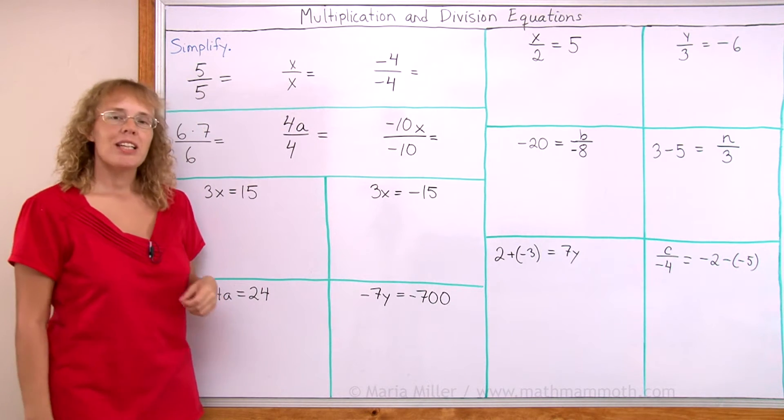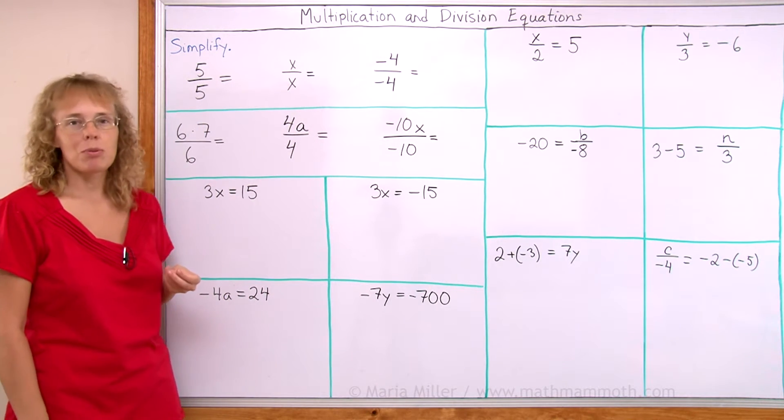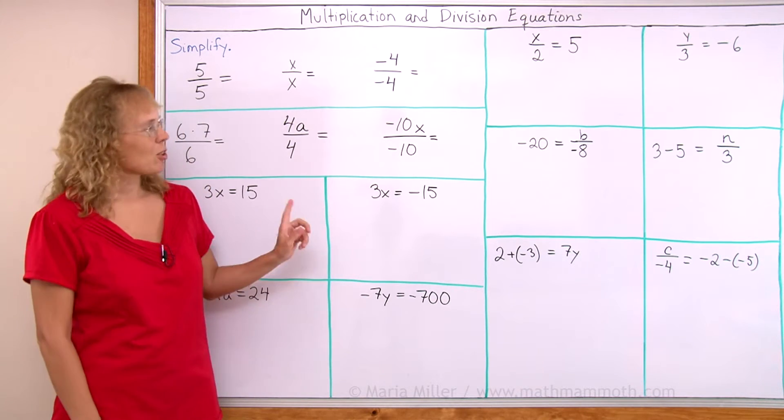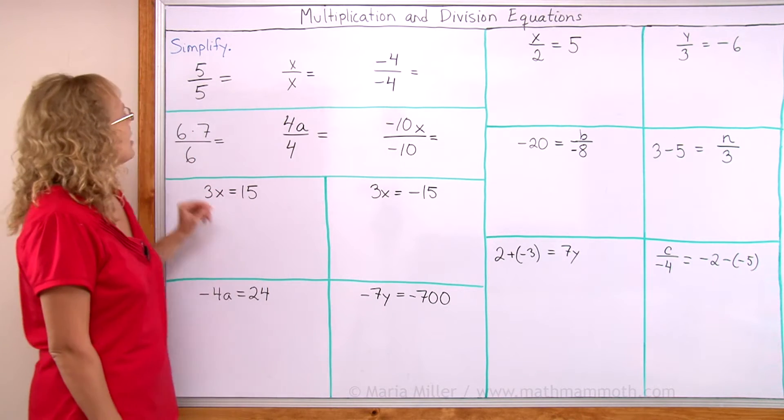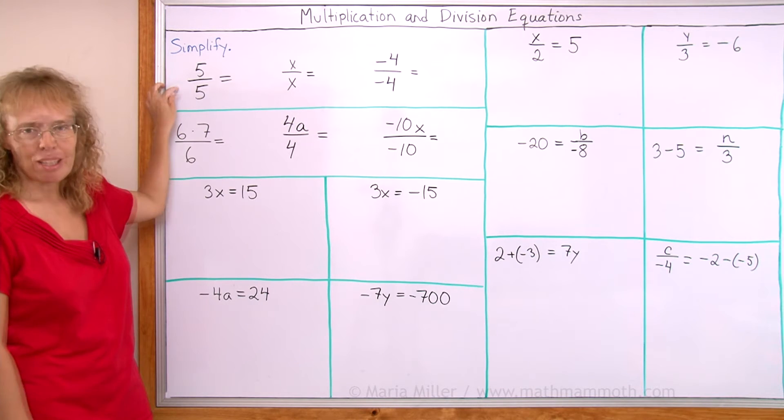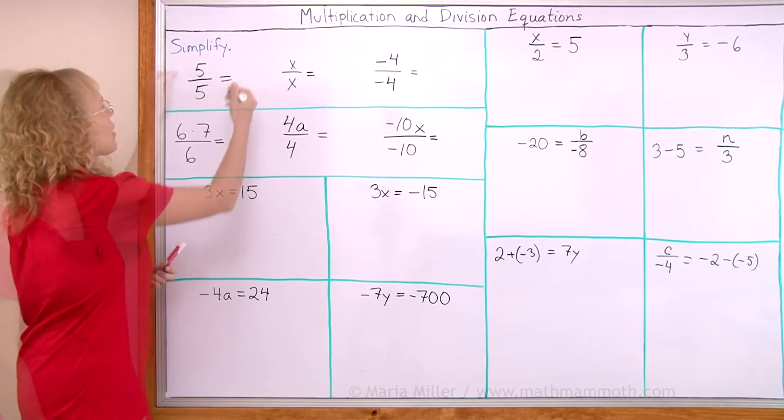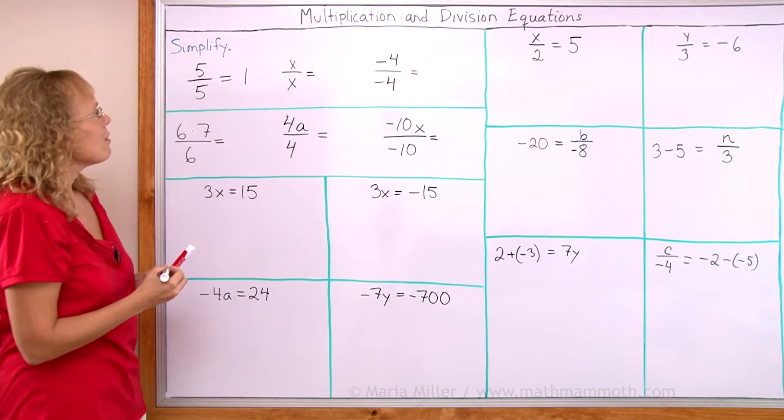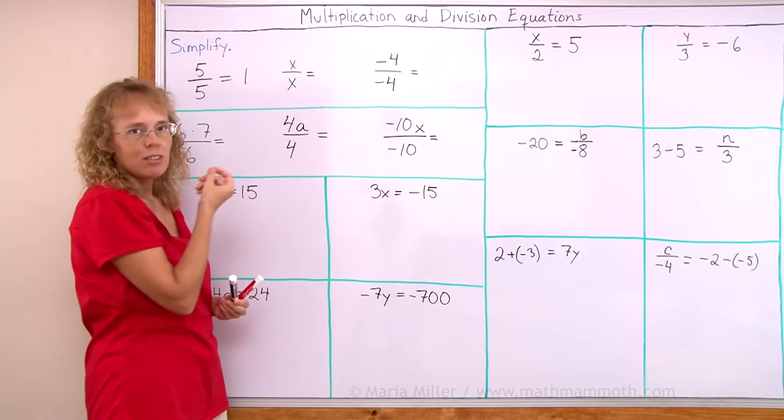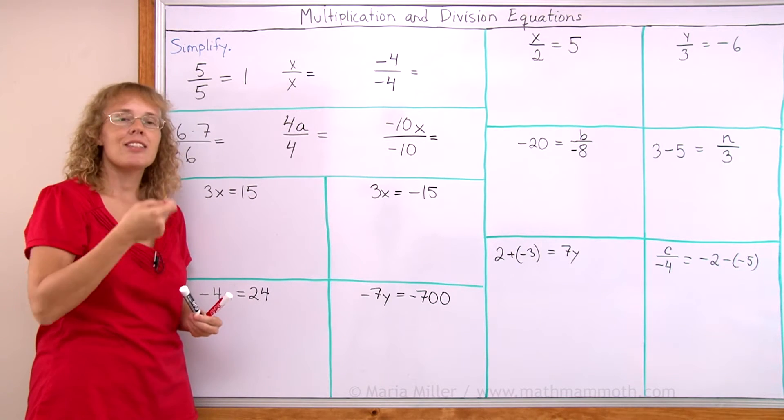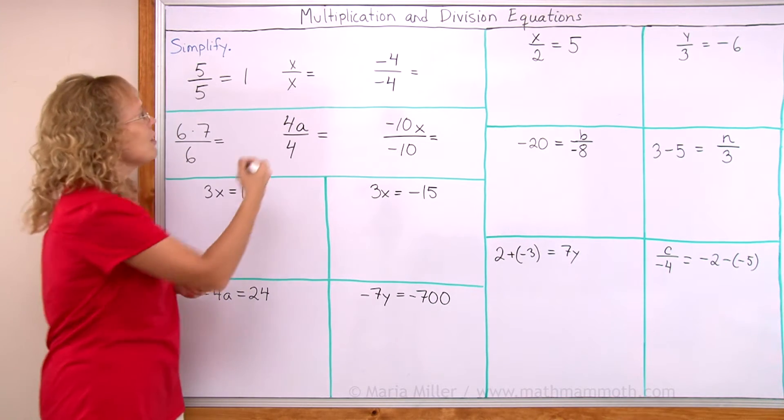But before we get into the equations, we're going to look at an important principle in simplification that's going to be used in all these equations. And that is that the number divided by itself equals 1. So even if I had a variable or an unknown, x divided by x is a number divided by itself. Even this would be 1.